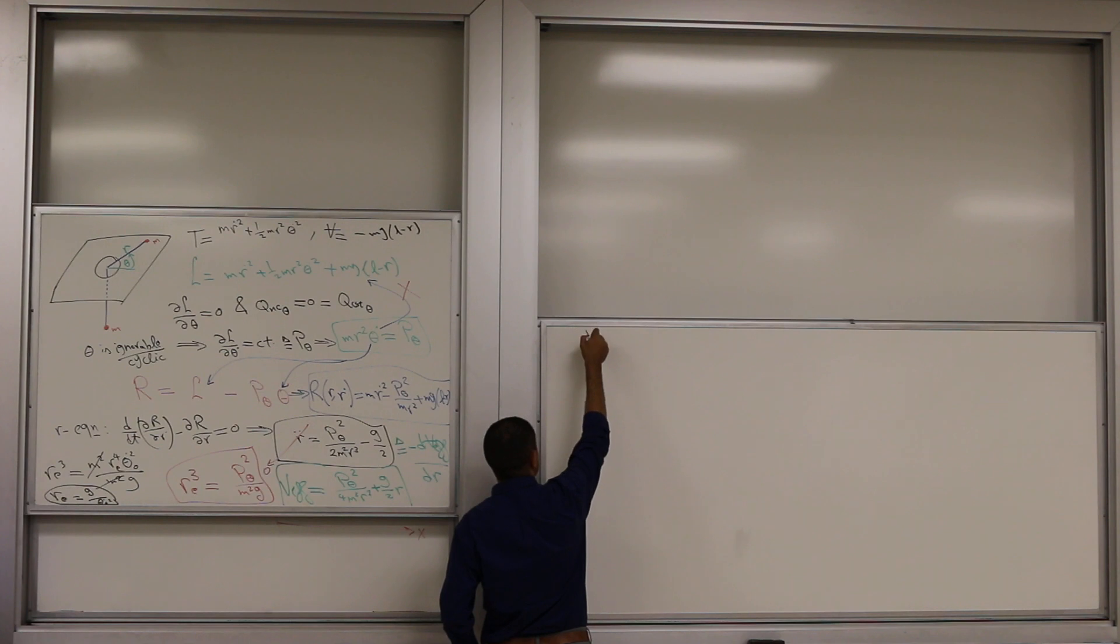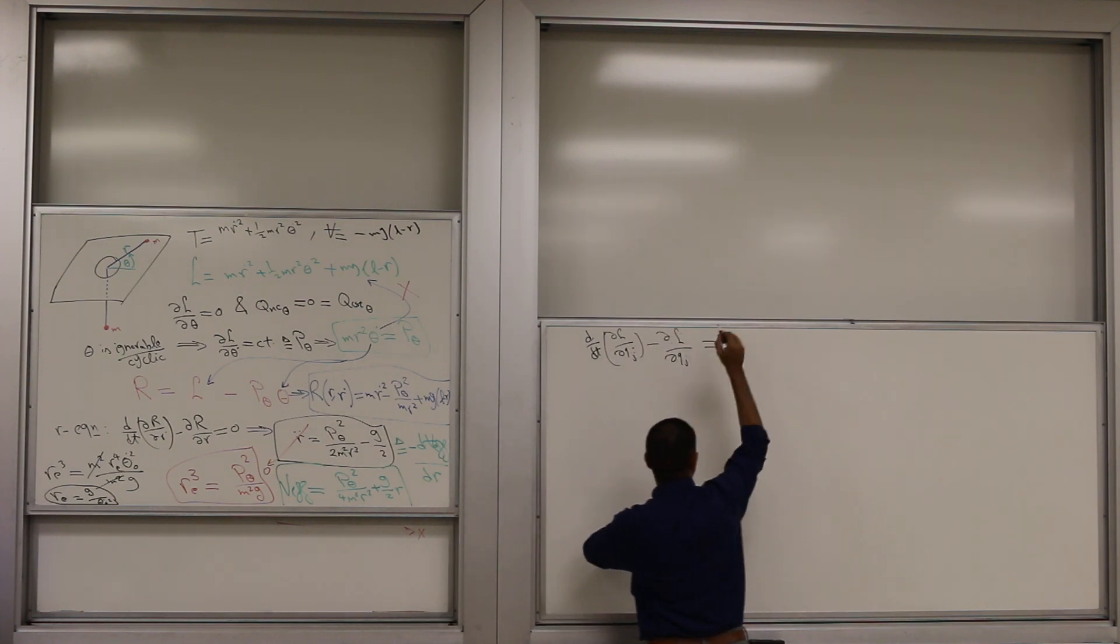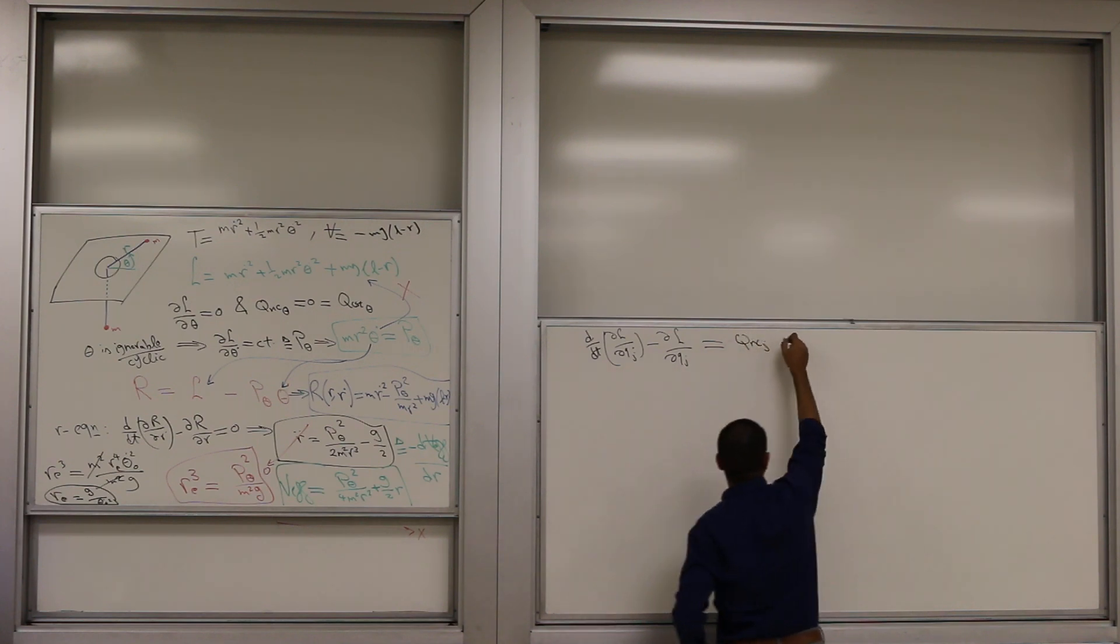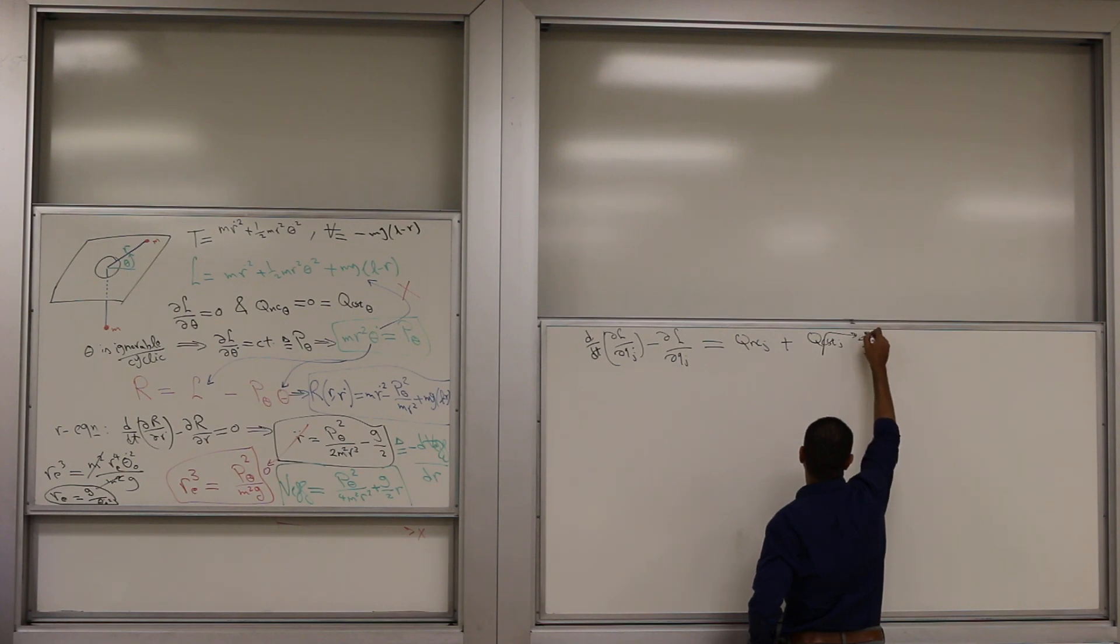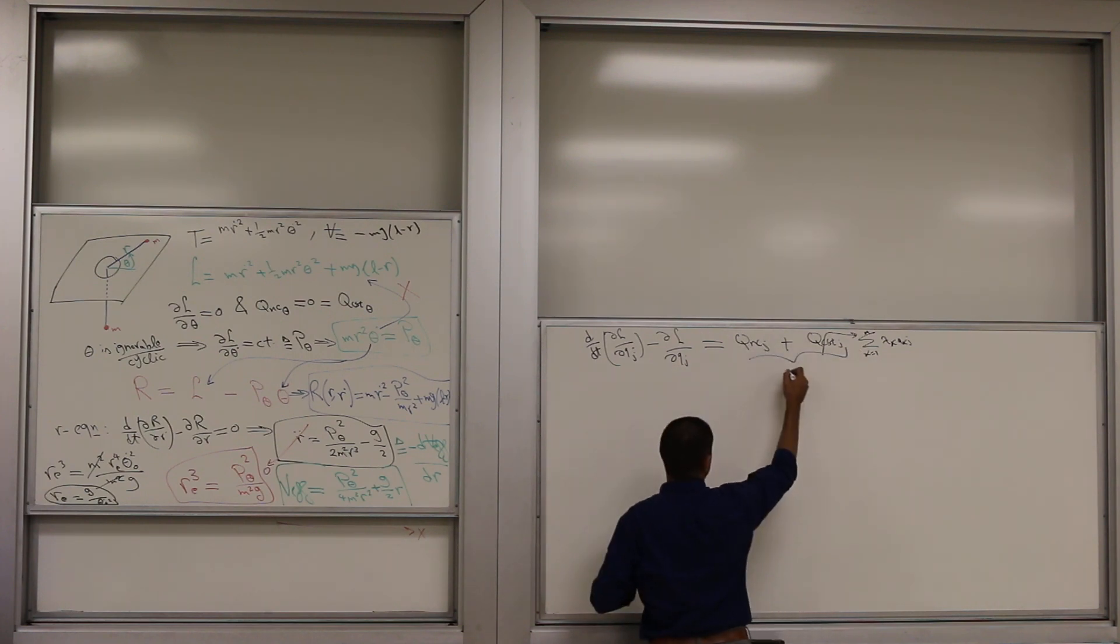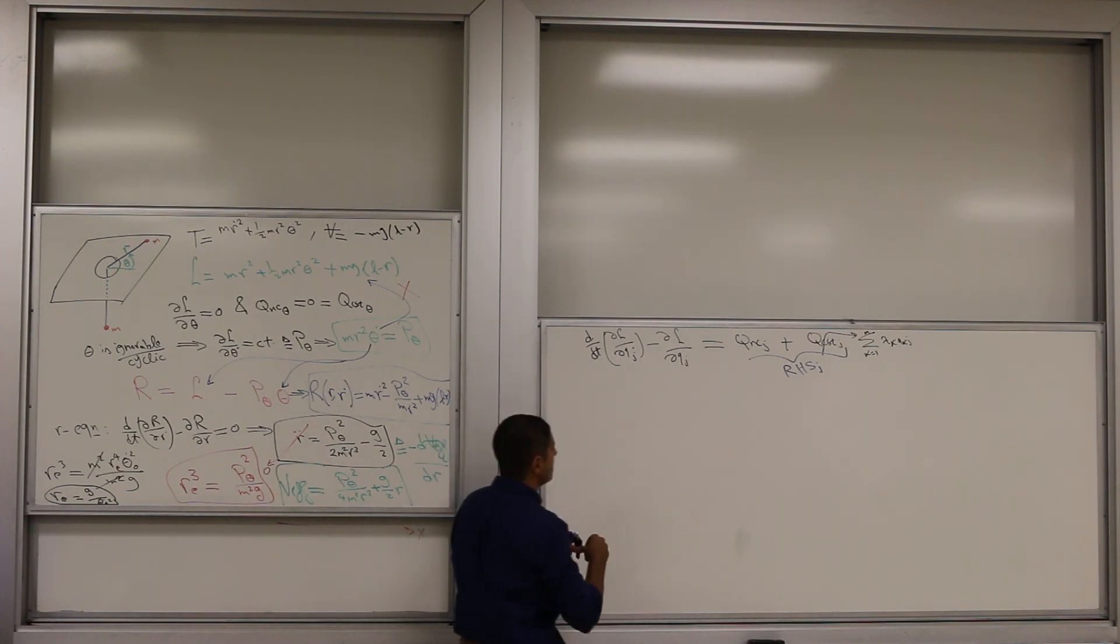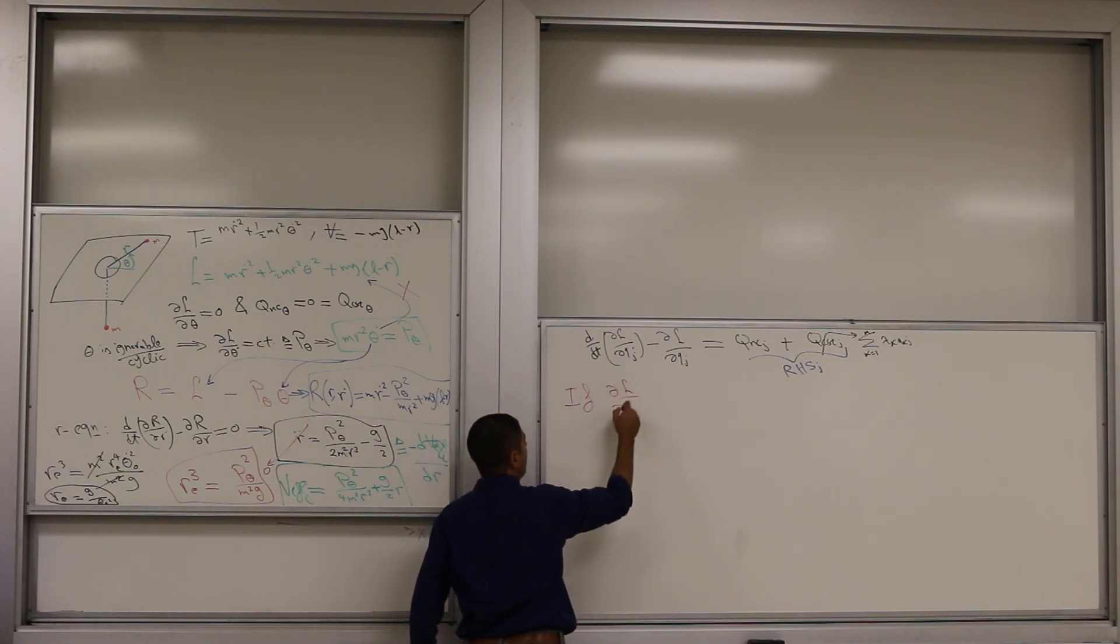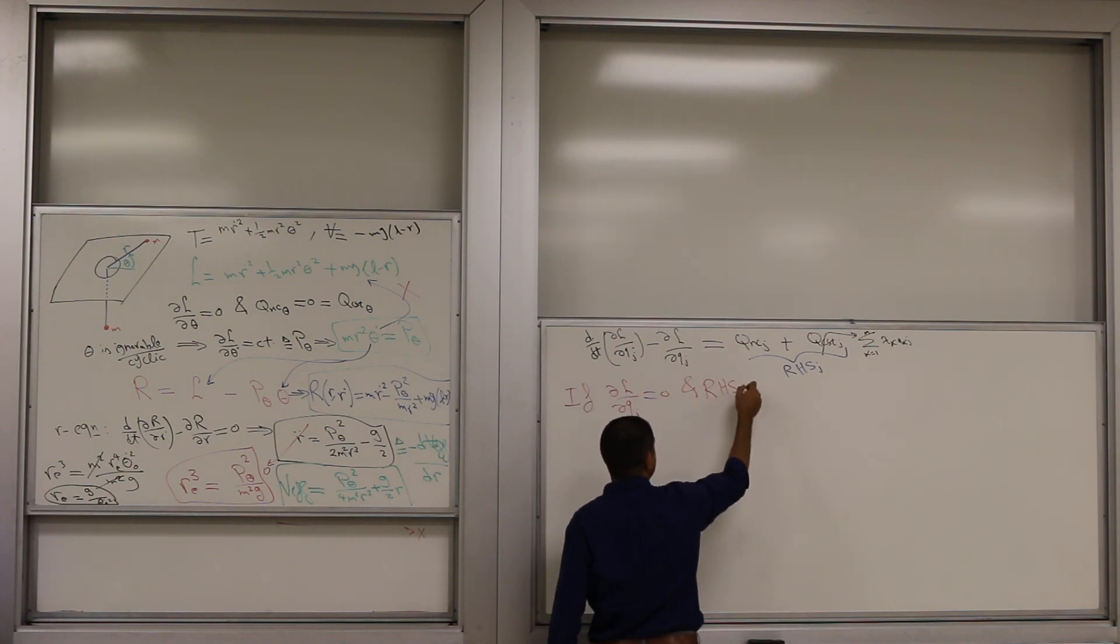So this is your Lagrange's equation: d by dt partial L partial qj dot minus partial L partial qj equals your right-hand side, which is the non-conservative plus the constraint. J, this guy is the summation k, it was one to m, lambda k, a kj. Okay, so we're going to call this my right-hand side j. So as you see from this equation, if we have partial L partial qj is zero, this term is zero and the right-hand side is zero, right?